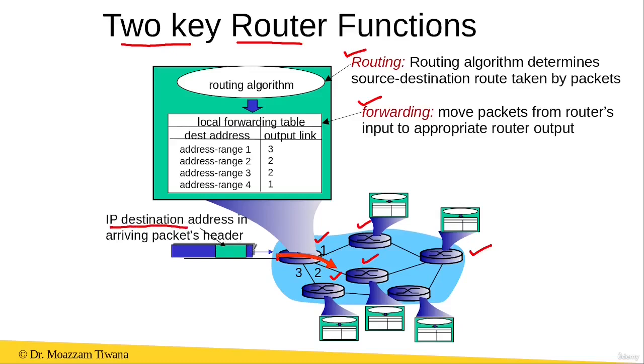Now as this IP packet enters this router, the router can output it either at interface 1, interface 2, or interface 3. Inside the router there is a routing table which is also called the local forwarding table.